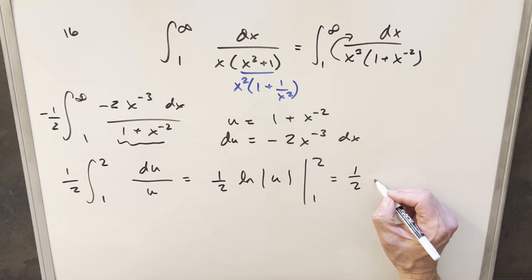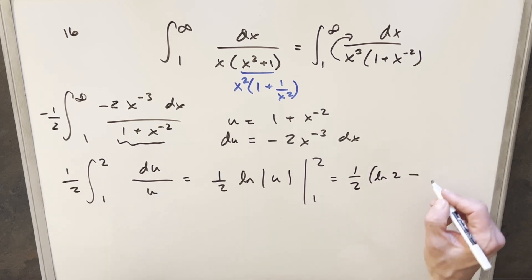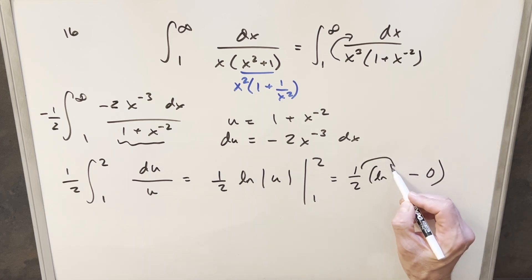Evaluating this, we're going to have 1 half natural log of 2. Then evaluating it at 1, we have natural log of 1, but that's just going to be 0. And I think what I'll do is take this 1 half into the exponent. And so I can write this for my final solution as just natural log square root of 2. And that's it.